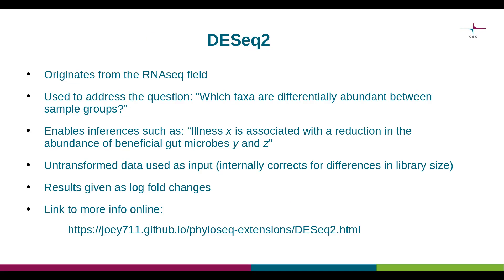The previous methods were all based on distance matrices. Another option for statistical comparisons of microbial community data in Chipster includes using the DESeq2 package. DESeq2 is a method that originates from the RNA-seq field but is increasingly being used by microbiologists. It is rather complex mathematically speaking and I won't cover the details in this video; instead we can focus on the types of questions it can help answer and the inferences we can make based on the output.